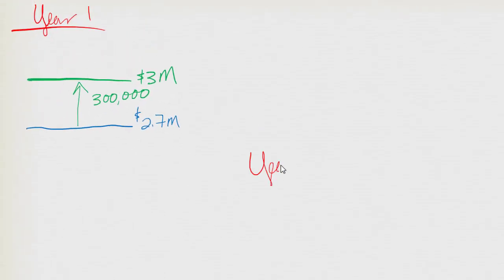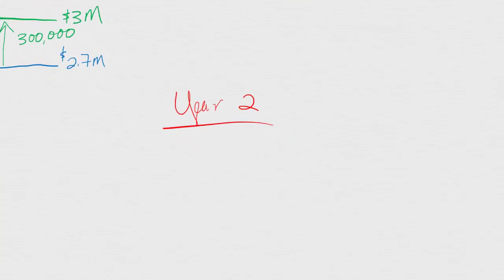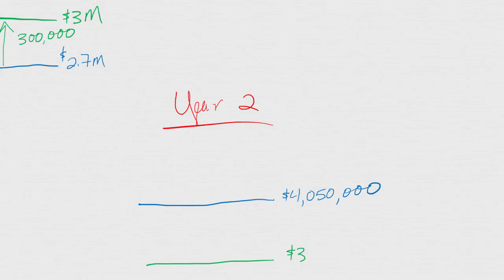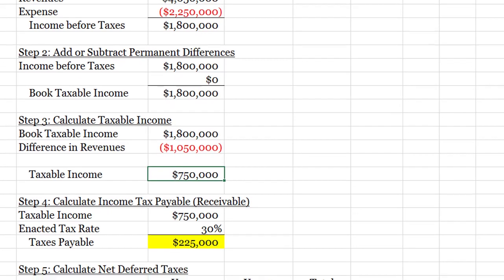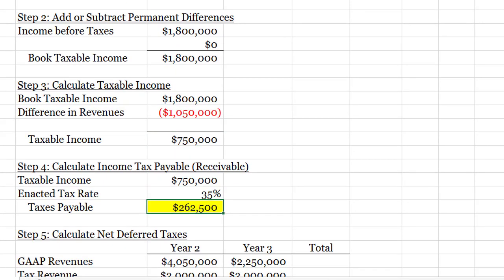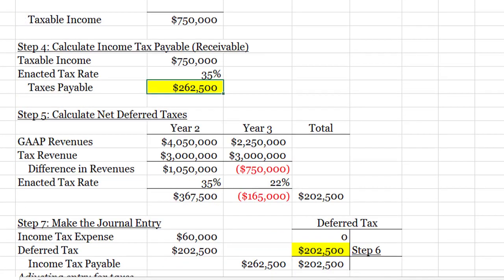Let me jump back to my PowerPoint slide where I can draw this. We're going to start with our GAAP number — GAAP revenue for this year is $4,050,000. For tax purposes, I'm recording $3,000,000 cash coming in, which is below the $4,050,000. My difference as I move from GAAP to tax is $1,050,000, but this time it's negative because I'm going from $4,050,000 down to $3,000,000. That's the adjustment I need to see in my Excel spreadsheet.